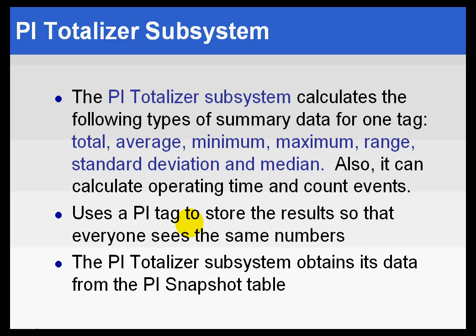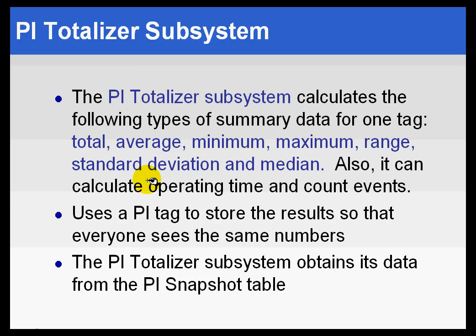We have another subsystem called the PI Totalizer Subsystem. The Totalizer calculates a variety of calculations — totals, averages, min, max, range, etc. The reason we call it the Totalizer is because that's the most popular feature. This is different than Performance Equations because it's not an open-ended expression syntax — it's like choosing one from column A and one from column B. The other key difference is it makes use of the snapshot table instead of the archive table for doing calculations, which makes it slightly more accurate than doing the same things using Performance Equations.